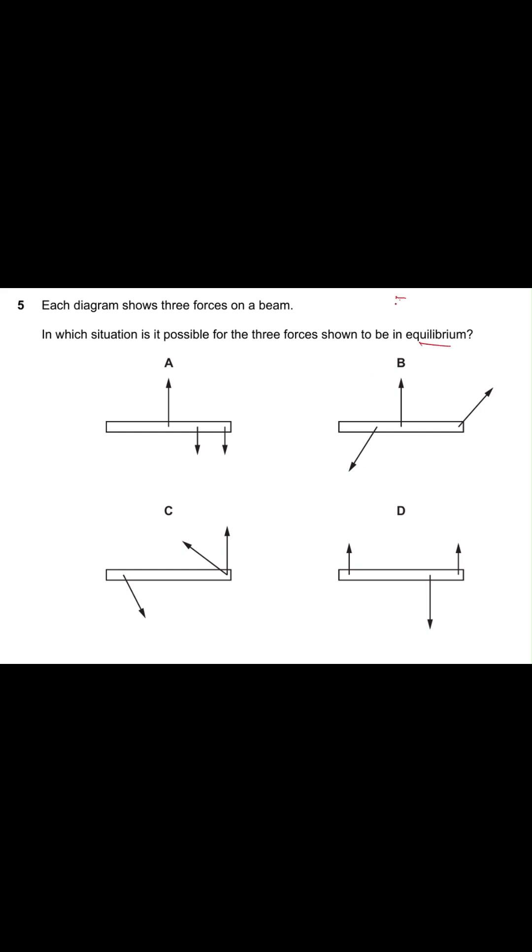Now what about this? In option A, this one is acting at the center which will make the beam move clockwise. What about two and three? Suppose if this is one, two, and three, two and three is also going to make the beam move clockwise. So the object under A is going to turn clockwise.